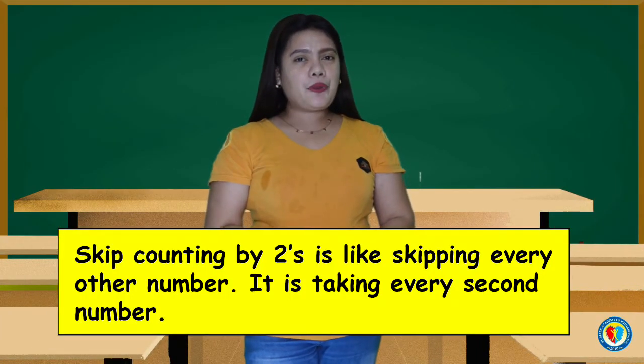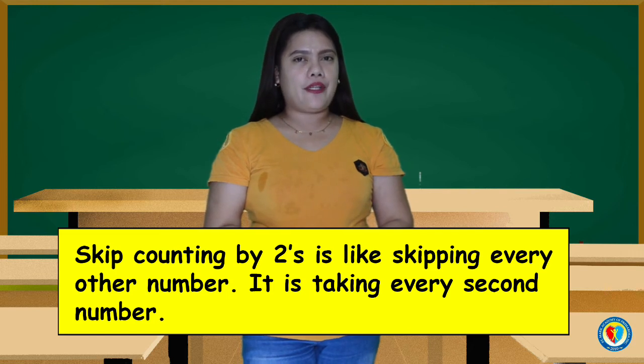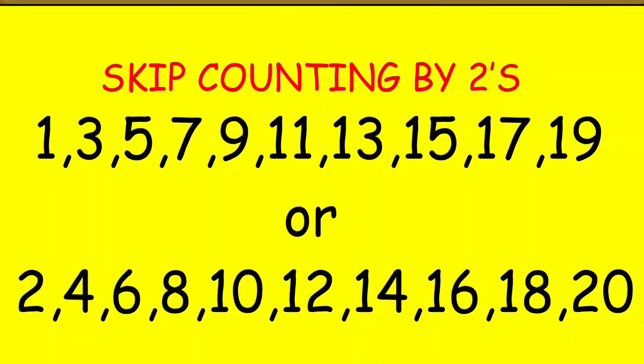Skip-counting by 2's is like skipping every other number. It is taking every second number. It could be 1, 3, 5, 7, 9, 11, 13, 15, 17, 19, and so on.